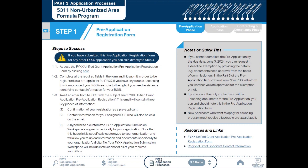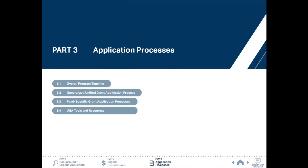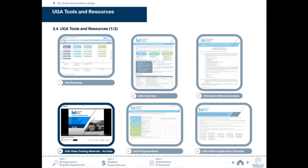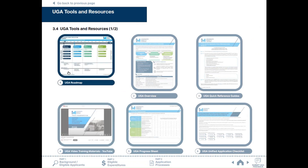Part 3.4 shows UGA tools and resources that are available on the UGA website. If you click on the buttons, it will take you to the link where you can access them. If you have any questions, please contact your regional grant specialist. Thank you for your time.